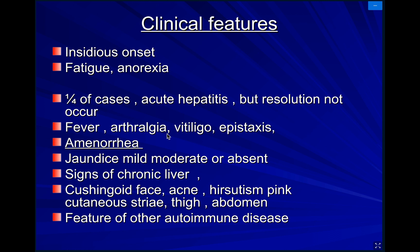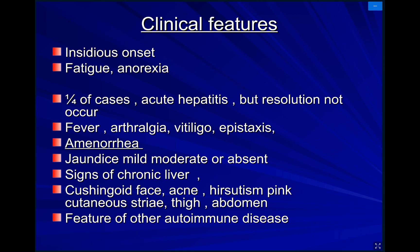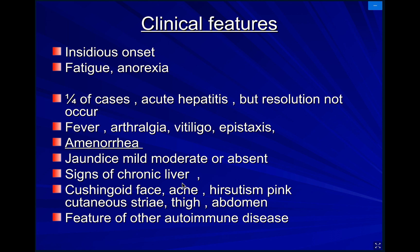There are signs of chronic liver disease because the disease is not resolved. Signs of chronic liver disease include jaundice, spider nevi, palmar erythema, and gynecomastia in males. The face will be a cushingoid face — a round face like a moon, which we call a moon-like face.